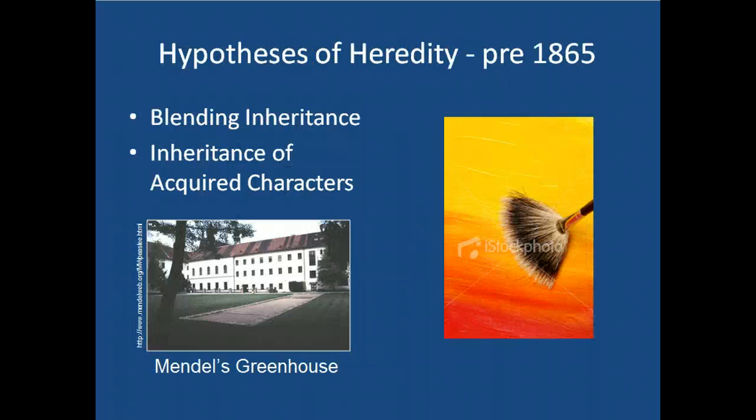Mendel was primarily interested in testing the two most accepted hypotheses of heredity before 1865: blending inheritance and the inheritance of acquired characteristics. In blending inheritance, the idea was that traits from a mother and father blend together in the offspring — for example, a father with yellow flowers and a mother with red flowers would produce offspring with orange flowers.